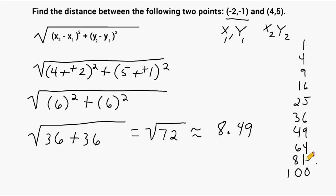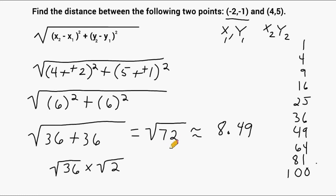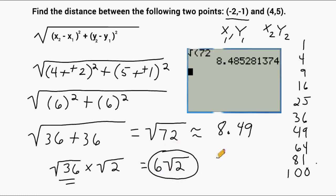We look at these perfect squares to see if any are factors of 72. Indeed, 36 is a factor of 72, so we can rewrite the square root of 72 as the square root of 36 times the square root of 2. We find a factor pair where one factor is a perfect square. Since the square root of 36 is 6, we write 6 on the outside of the square root of 2. So the square root of 72 in simplest radical form is 6 times the square root of 2, which still equals approximately 8.49.